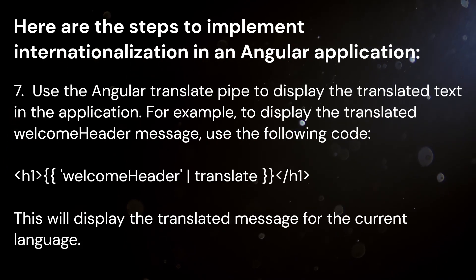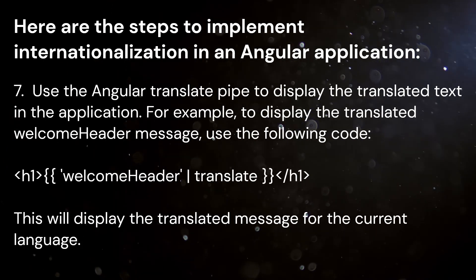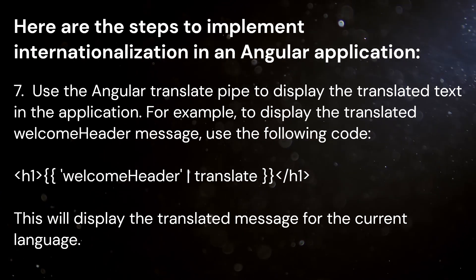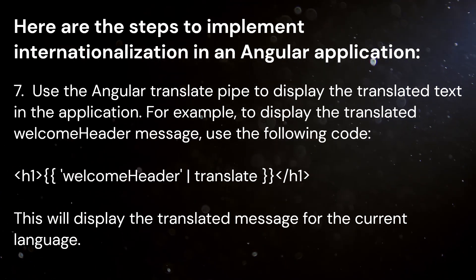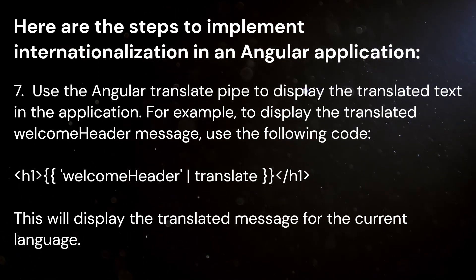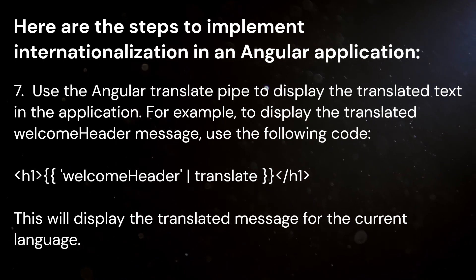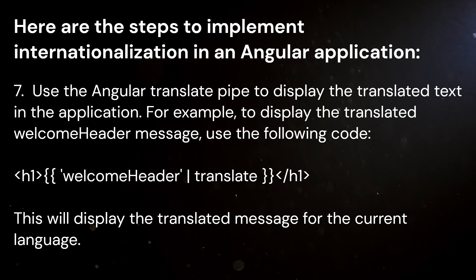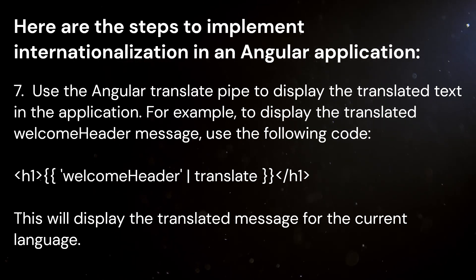Seventh, use the Angular Translate pipe to display the translated text in the application. For example, to display the translated welcome header message, use the following code. This will display the translated message for the current language.